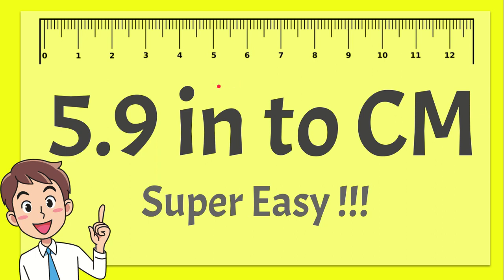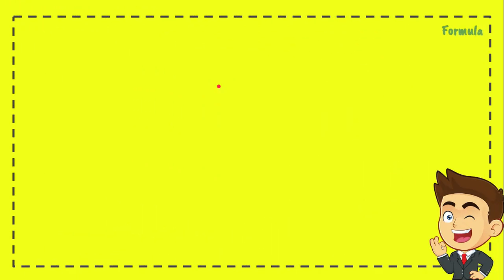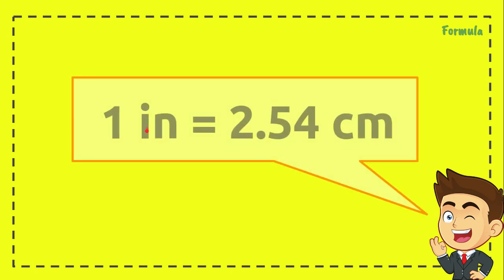This is the very first step you need to take. We need to know the formula first, and this is the formula: 1 inch equals 2.54 centimeters. You can also call it the conversion factor.